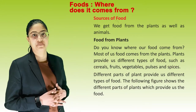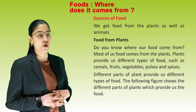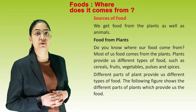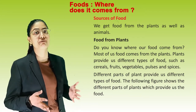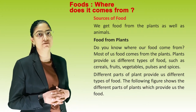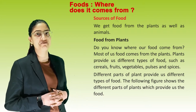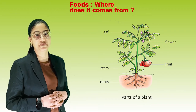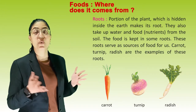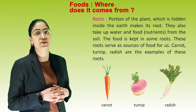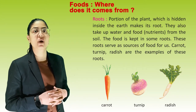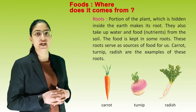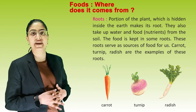Sources of food. We get food from plants as well as animals. Food from plants: most of our food comes from plants. Plants provide us different types of food such as cereals, fruits, vegetables, pulses and spices. Different parts of plants provide us different types of food. Roots: the portion of the plant hidden inside the earth are its roots. They take up water and nutrients from the soil. The food stored in some roots serves as a food source for us. Carrot, turnip, and radish are examples of these roots.